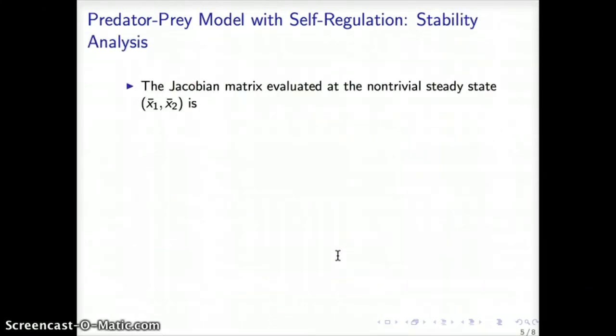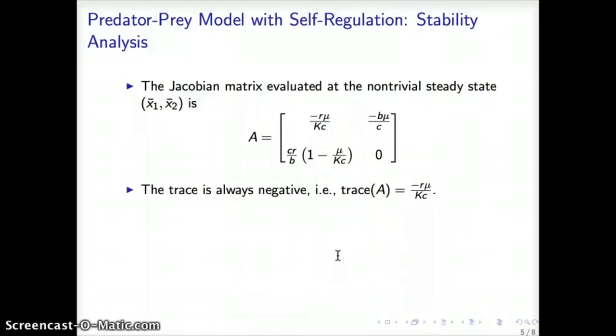So we're interested in the stability of the non-trivial steady state. We compute the Jacobian matrix, the matrix that contains the partial derivatives of the right hand side of the equations, and this matrix takes this form when evaluated at the non-trivial equilibrium point. The first calculation we do is the calculation of the trace of this matrix. The trace is defined as the sum of the diagonal entries. Since we assume that all parameters for this model are positive quantities, then we observe the trace is always negative.